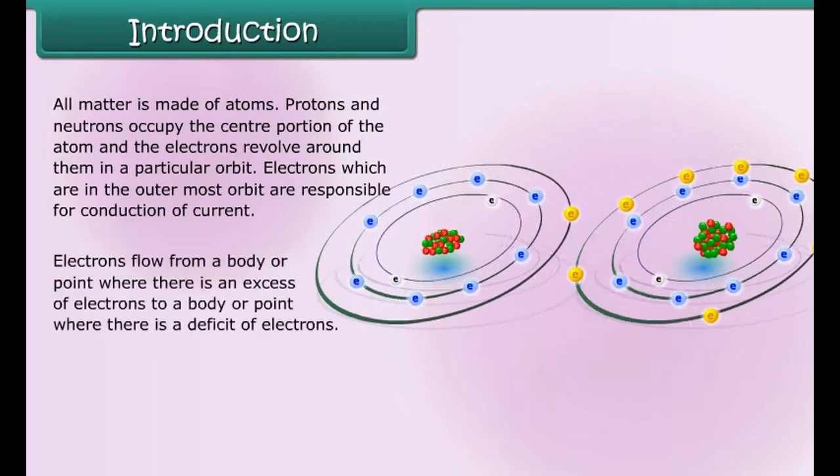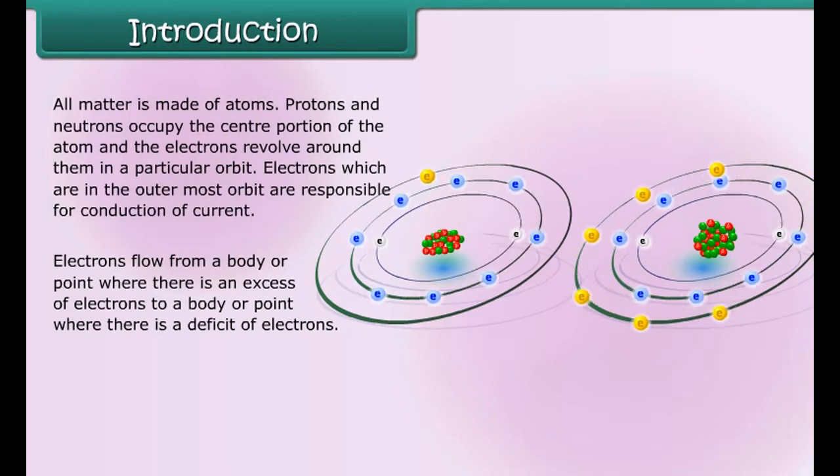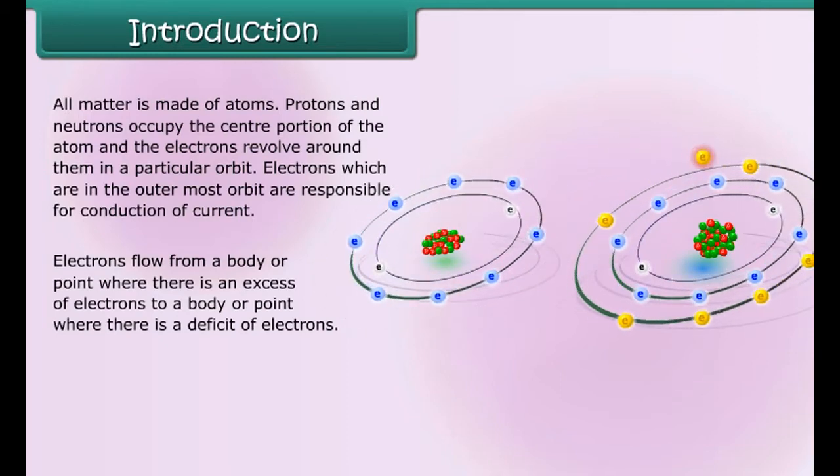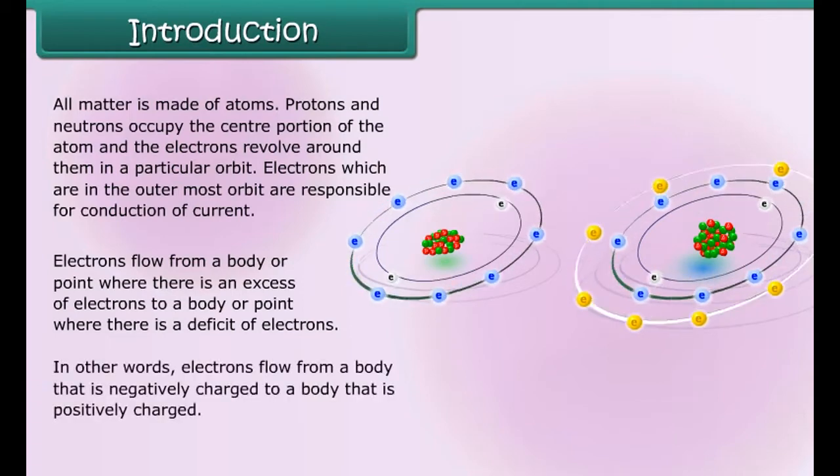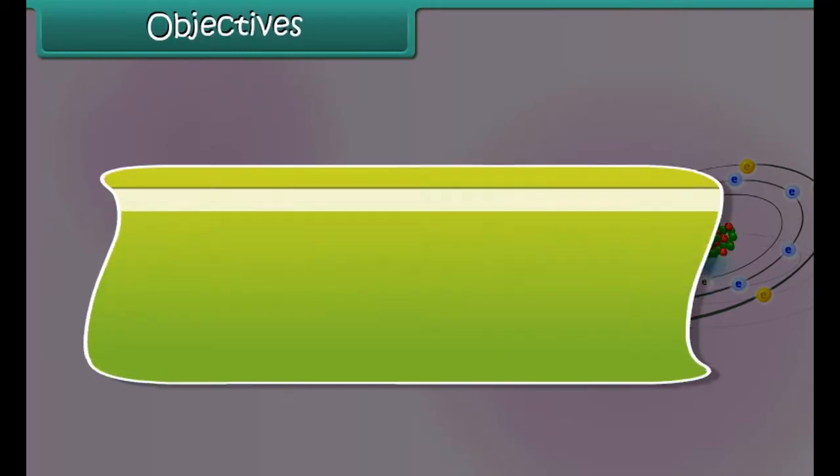Electrons flow from a body or point where there is an excess of electrons to a body or point where there is a deficit of electrons. In other words, electrons flow from a body that is negatively charged to a body that is positively charged.